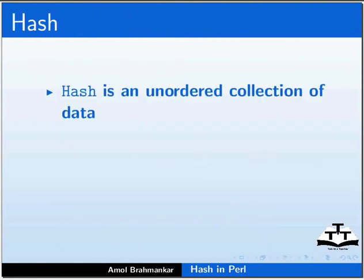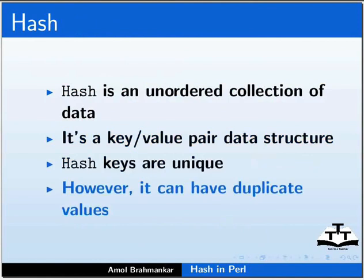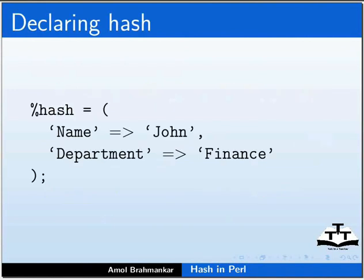Hash is an unordered collection of data. It's a key-value pair data structure. Hash keys are unique, however hash can have duplicate values. This is the declaration of a hash. Let us see how to get the value of a key from hash.